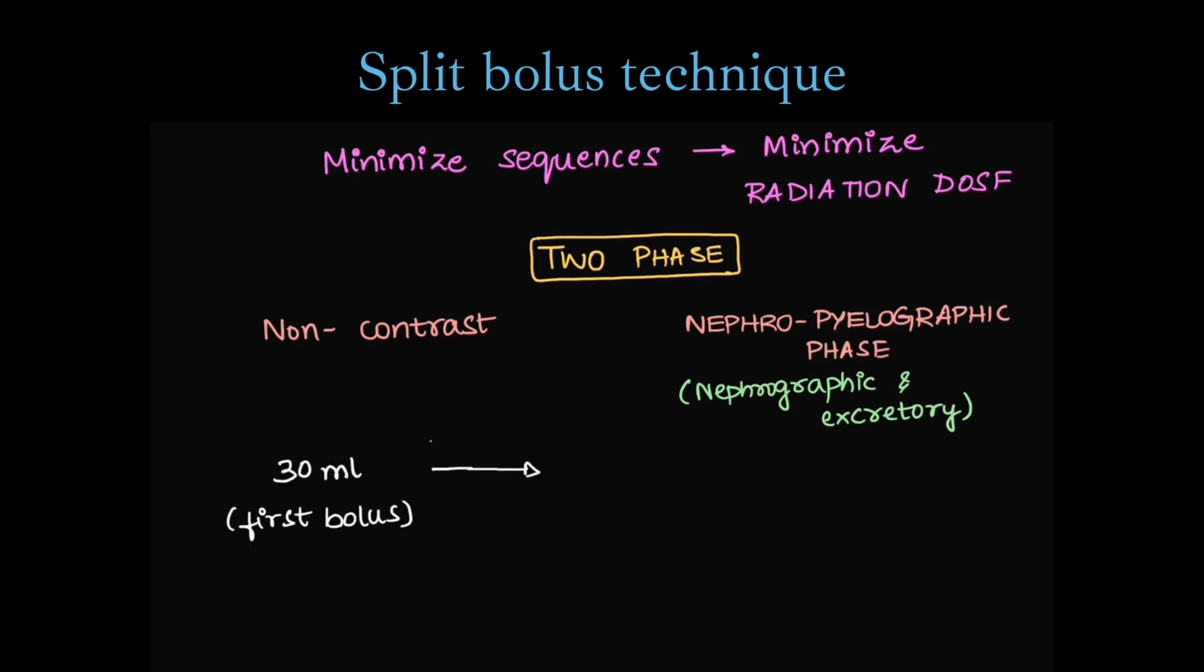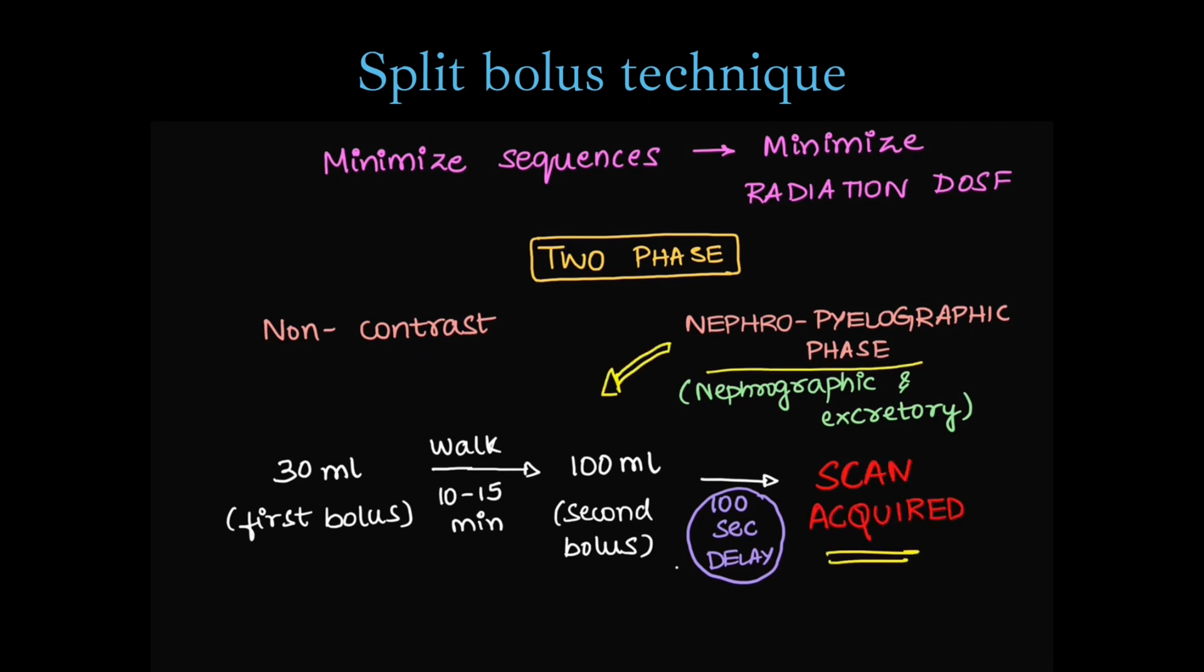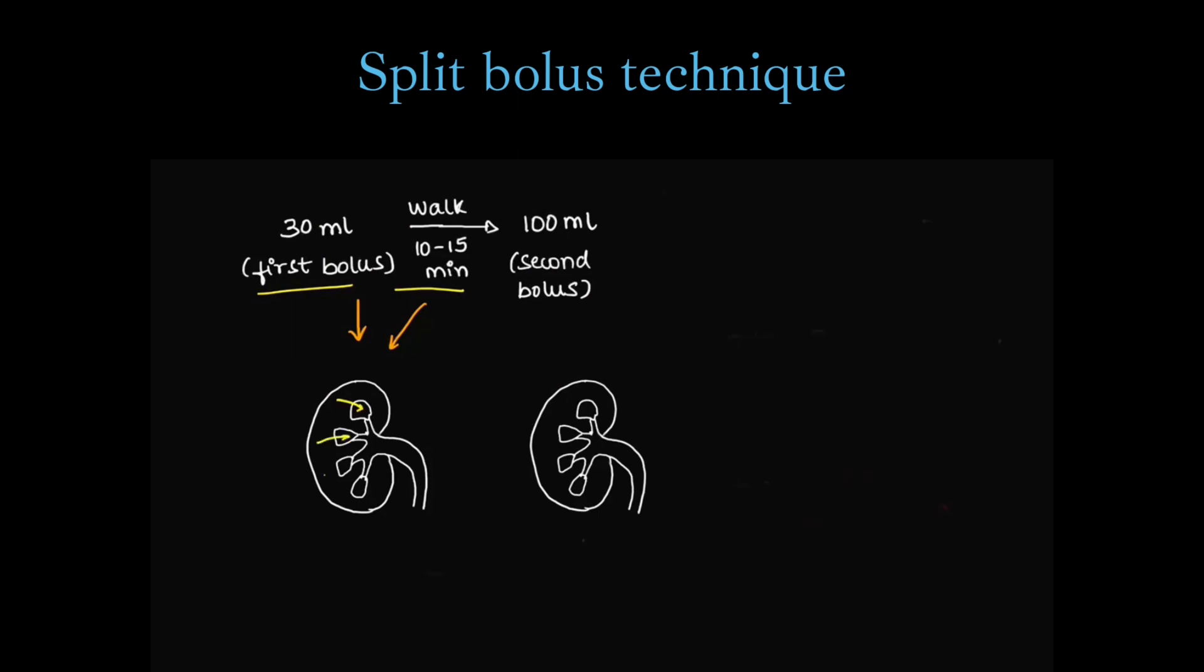So, first bolus, we give 30 ml of IV contrast. Patient is allowed to walk for 10 to 15 minutes. Then, we give 100 ml of second bolus contrast. Then, after 100 seconds delay, we acquire one sequence. This is the nephropylographic sequence which we acquire. We have non-contrast and this one sequence which combines nephrographic and excretory phase. Total, 130 ml of contrast is given in the split bolus technique.